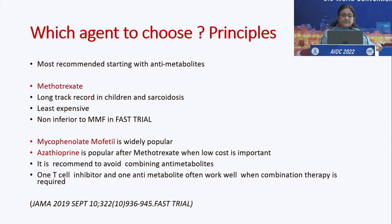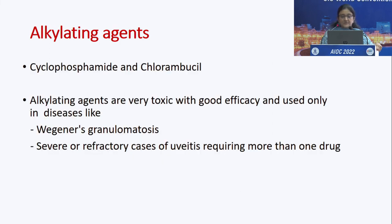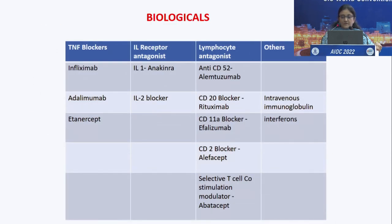It is most commonly recommended to start with anti-metabolites such as methotrexate, mycophenolate mofetil, or azathioprine — these are the most commonly used immunosuppressants in clinical practice. Alkylating agents are not often used due to their toxic effects, despite good efficacy; they are mainly reserved for indications like Wegener's granulomatosis or severe and refractory cases of uveitis requiring more than one drug.